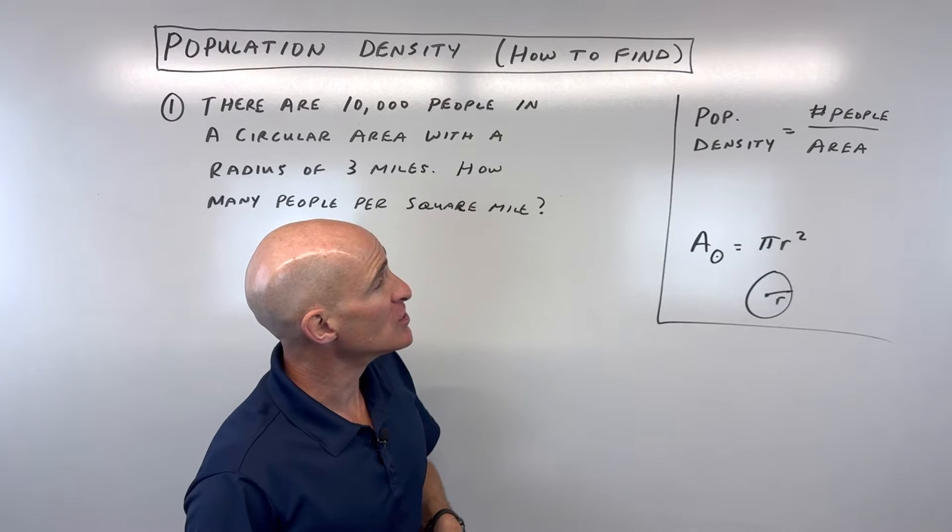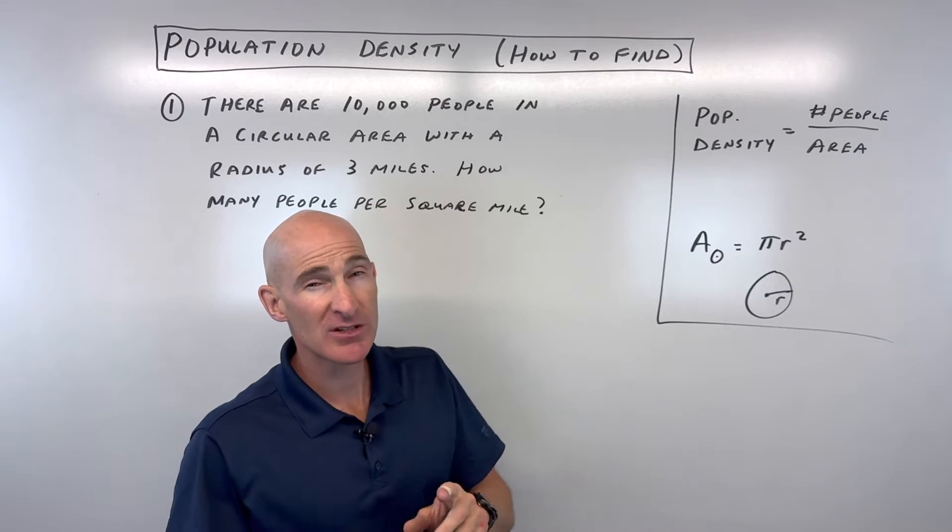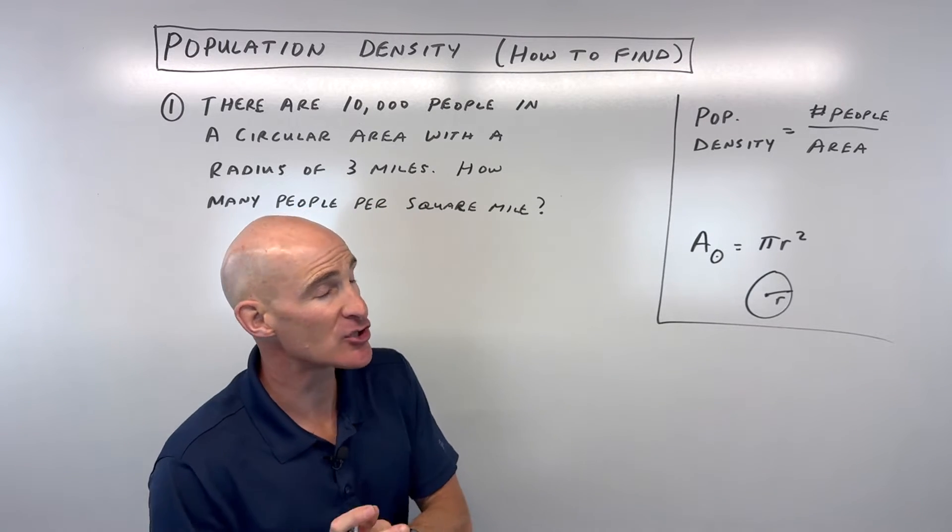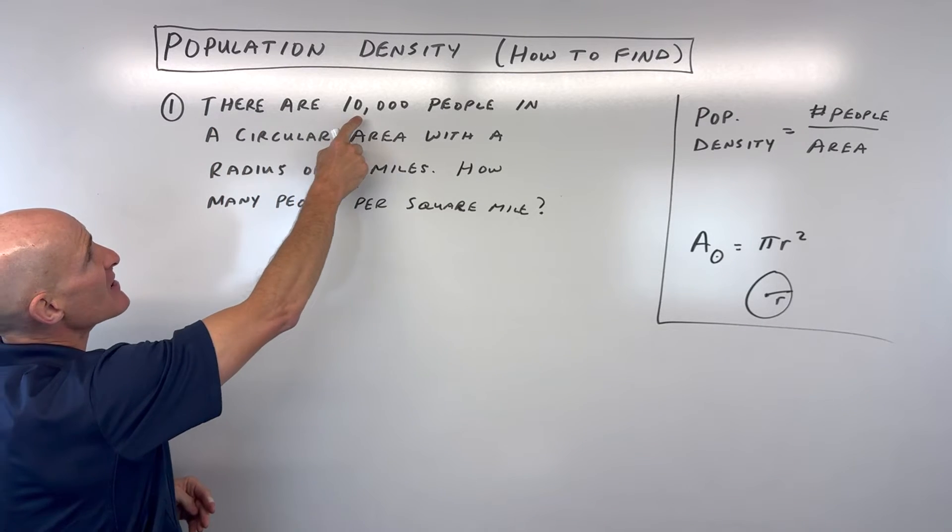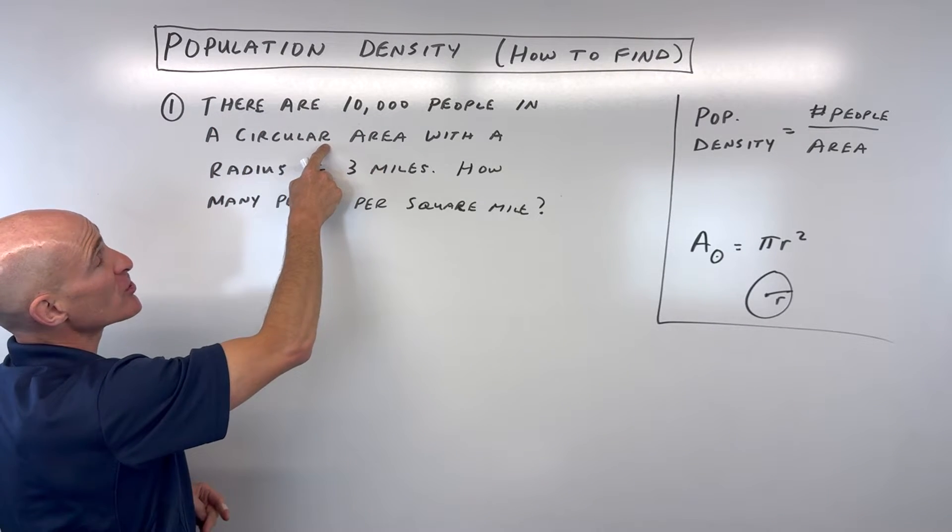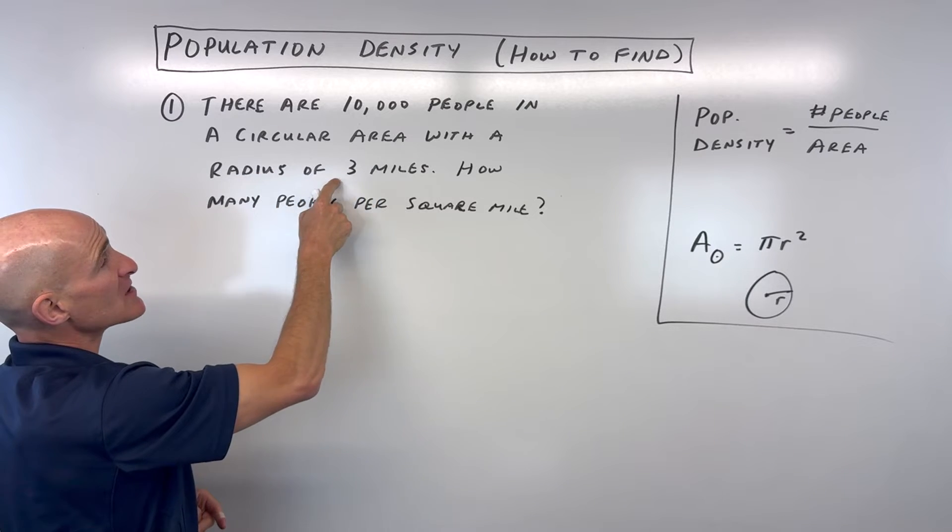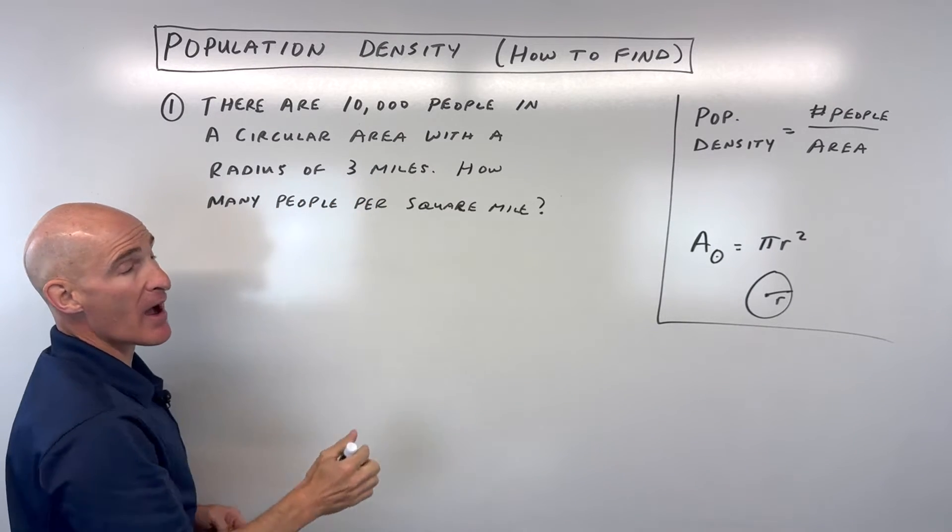Now one thing that you can do is look for some clues when you're doing these types of problems. See here it says there are 10,000 people in a circular area with a radius of 3 miles. How many people per square mile?